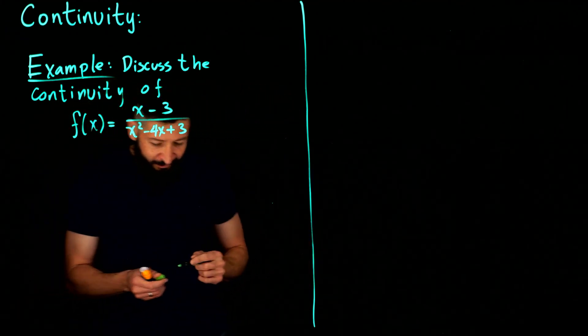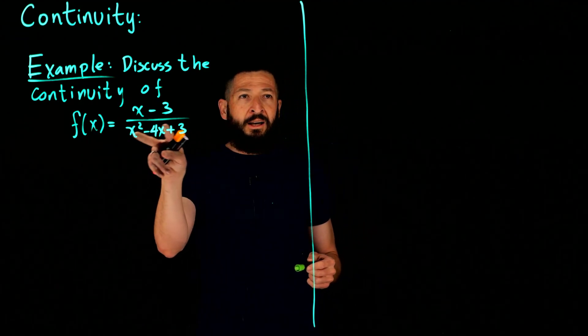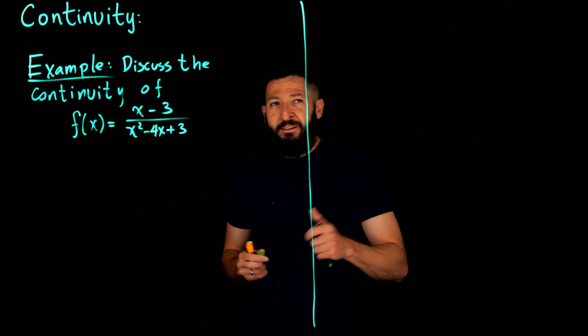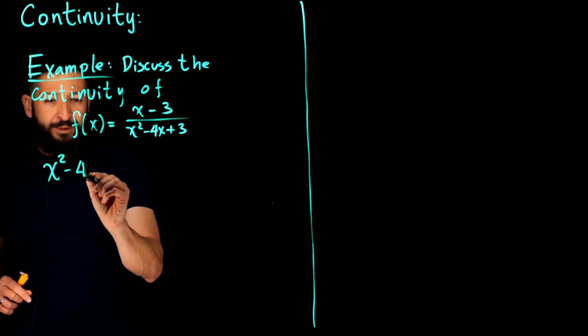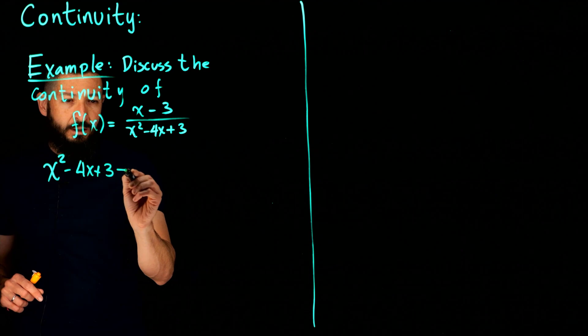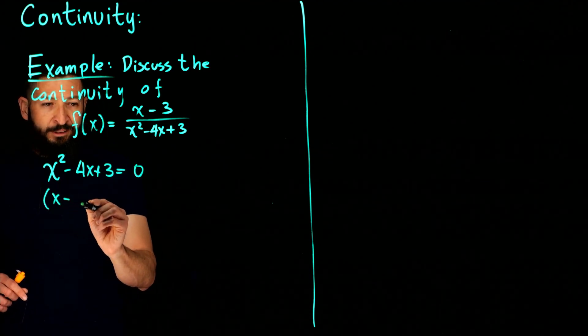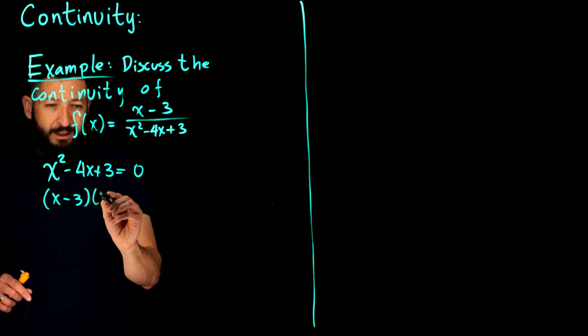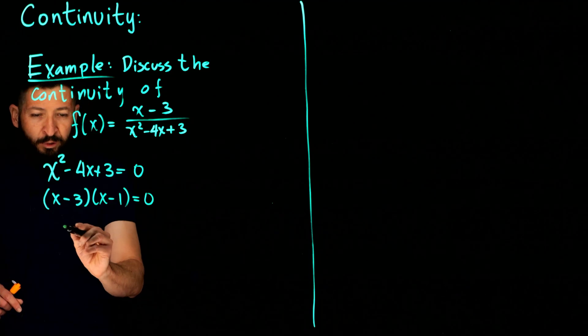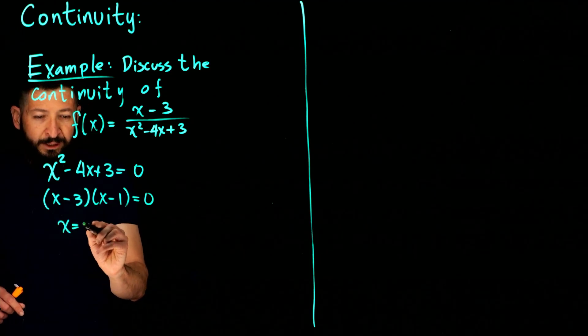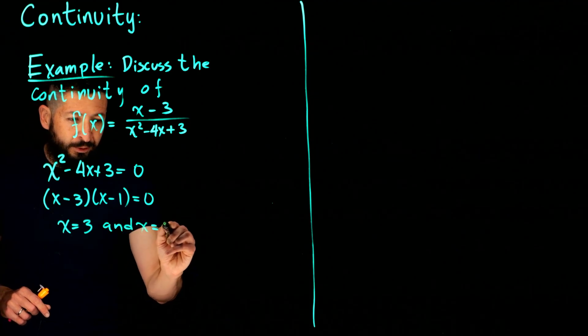So what points can cause you trouble before I get there? Things that can cause trouble are going to be zeros in the denominator, so let's start doing that. Let's find when would the denominator become zero. So you factor, so you get x minus 3 times x minus 1 equals zero, from where you get that x equals 3 and x equal to 1.